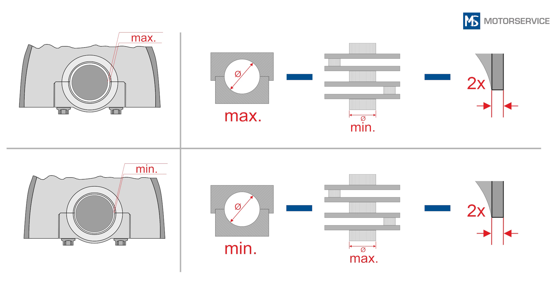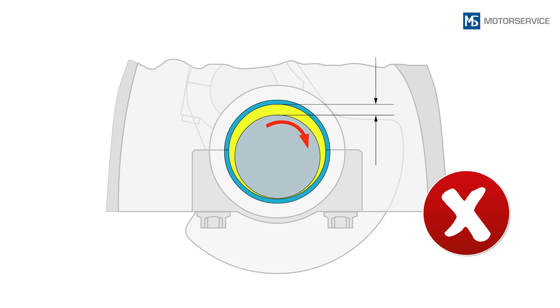The bearing clearance determined using the plastic gauge should lie within the calculated values. If the bearing clearance is too great, this must be compensated for with oversized bearing shells.